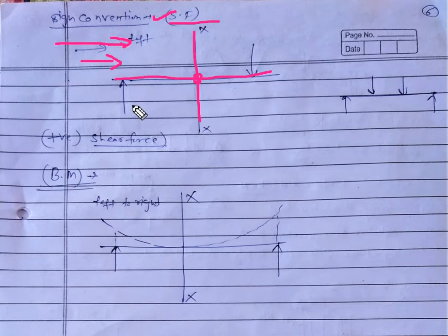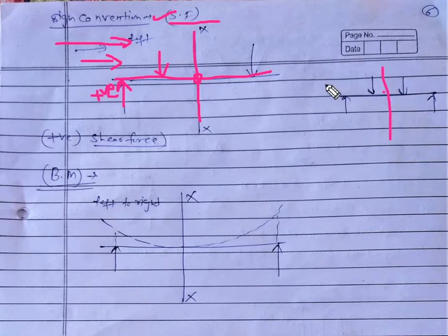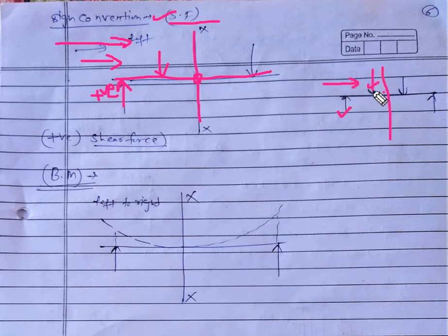In this condition, all the forces which are acting in the upward direction are considered as positive forces, and all the forces which are acting in the downward direction are considered as negative forces. For example, if we are interested to find the shear force at that point and we are approaching from left to right, this upward force is positive and this downward force is negative.